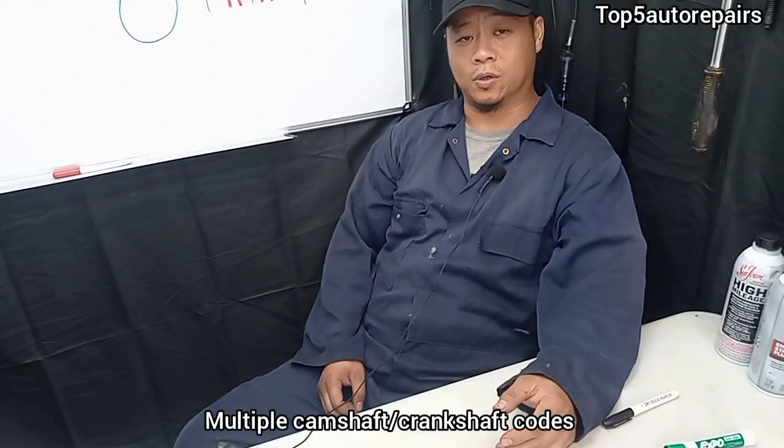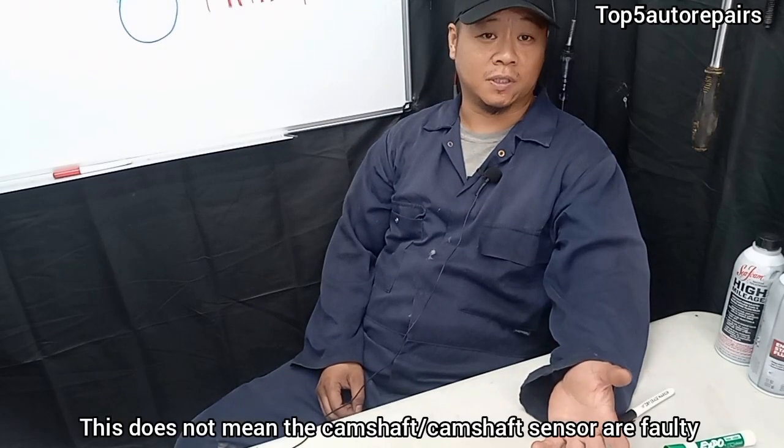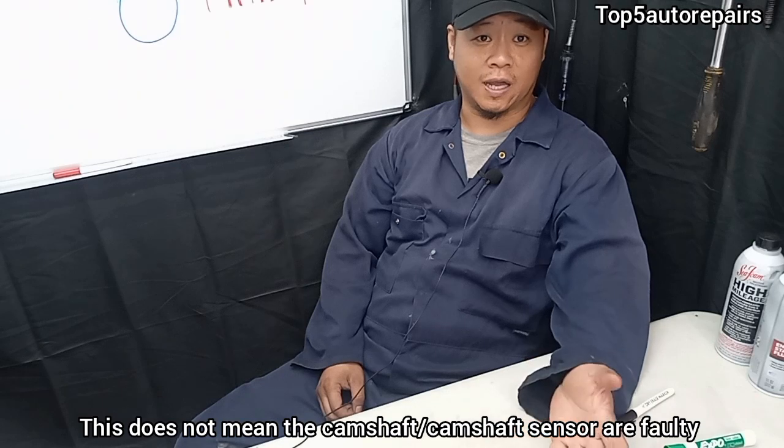The next common symptom you may notice is that you may have multiple camshaft or crankshaft codes. So basically, the camshaft and the crankshaft sensor monitor the rotational speed of the camshaft and the crankshaft. And basically when the speed is off and timing is off, this can trigger the camshaft and crankshaft code. So even if you replace the sensor, it's not going to fix the problem. Maybe you should suspect that the timing is off.